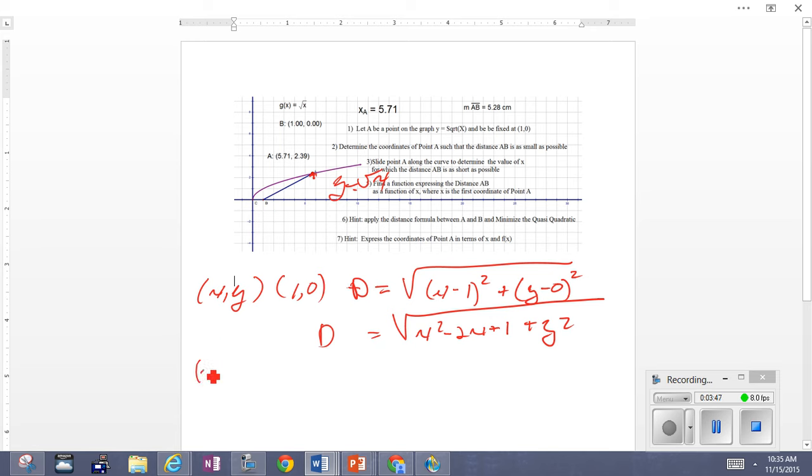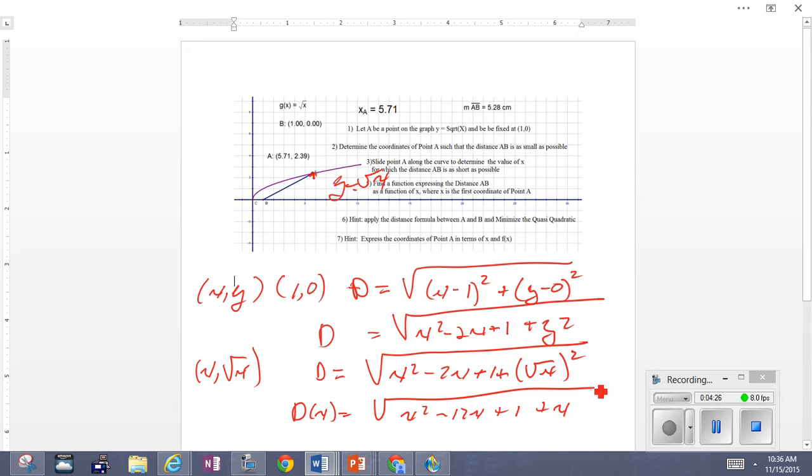How do we express this in terms of x? Well, since our point is on the graph y = √x, the y value on that point can always be replaced with √x. So the point is no longer (x, y), it's (x, √x). Having said that, we can replace y with √x, and that squared is just going to give us x.